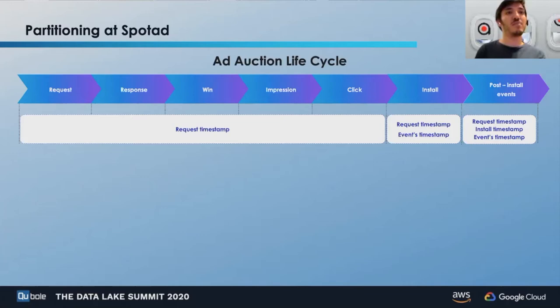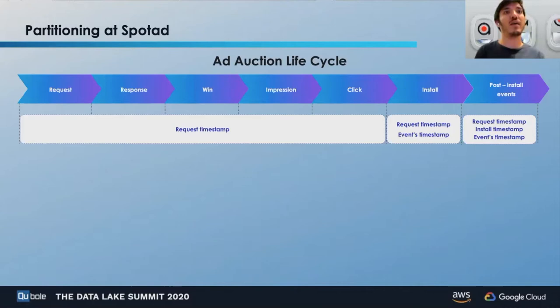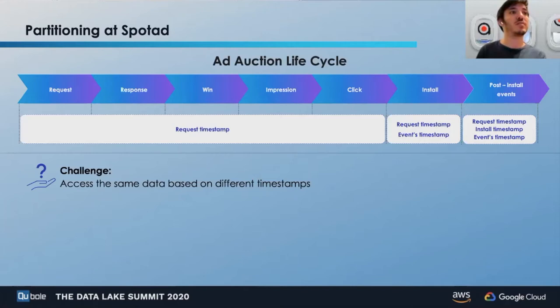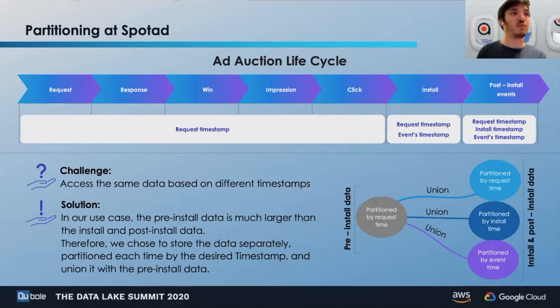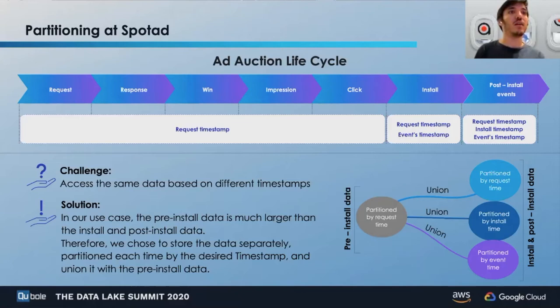Another metric we frequently look at is retention — a metric that measures the amount of users that have opened the app in the days following the install. This means we have to look at both the install timestamp and the time difference between the install timestamp and the post-install event timestamp. The challenge is how to access the same data using different timestamps. Our solution is to take the install and post-install data, which is much smaller in volume than the pre-install data, and store it in three different locations partitioned by three different timestamps. This achieves performance improvement, reduction in storage size, and ease of recovery.